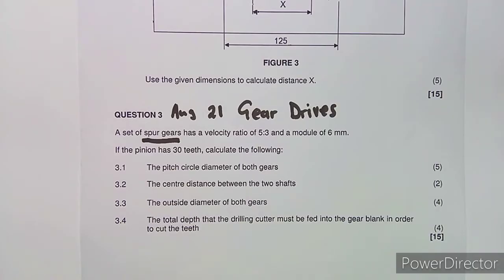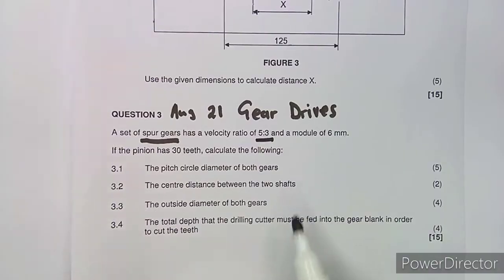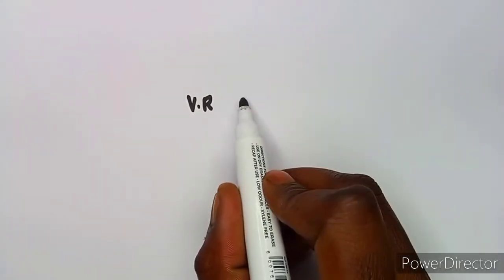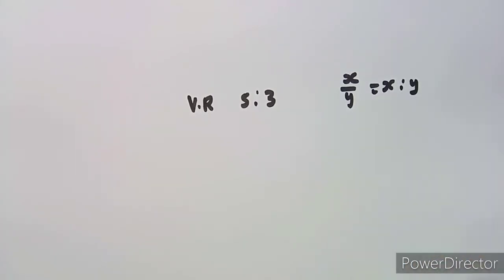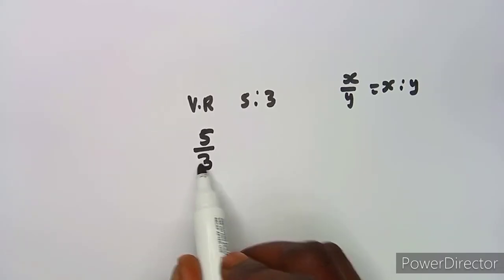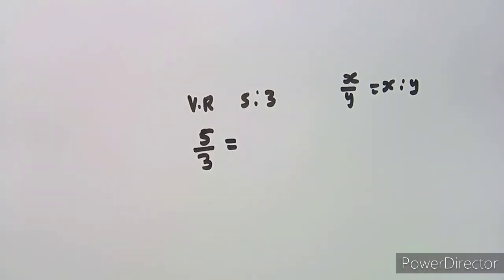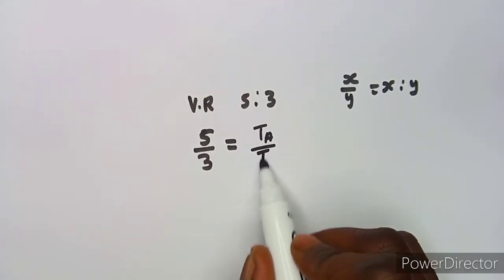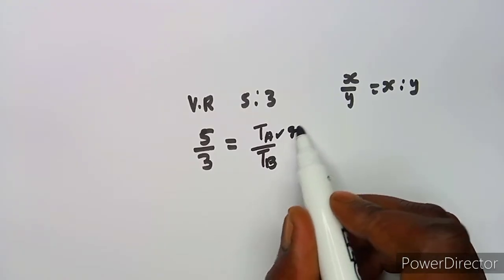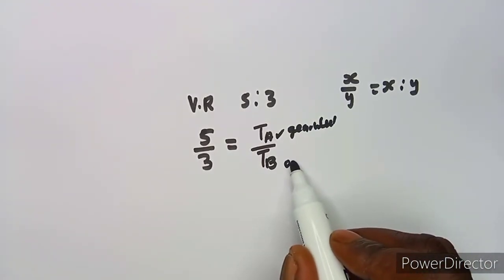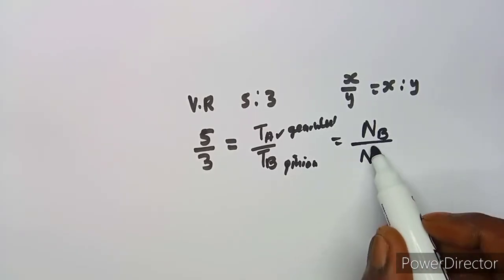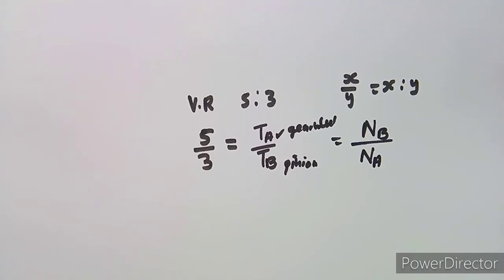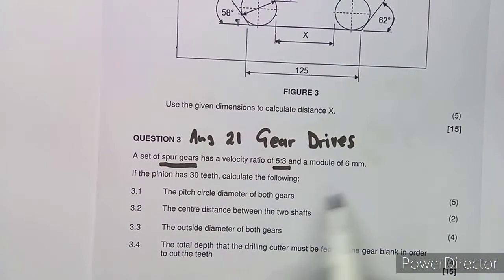We are given the velocity ratio which is 5 to 3. Remember I said the velocity ratio can be written as a fraction — 5 over 3 — and the velocity ratio is equal to Ta over Tb, where Ta is the gear wheel and Tb is the pinion. It can also be written as Nb over Na, which is the rotational speed in revs per minute.